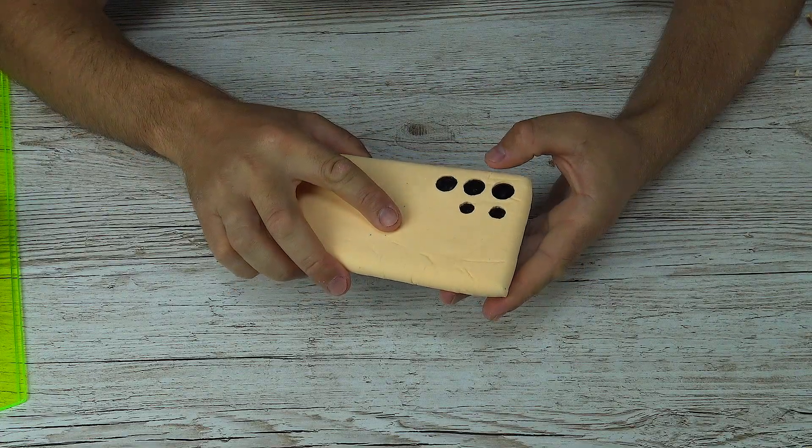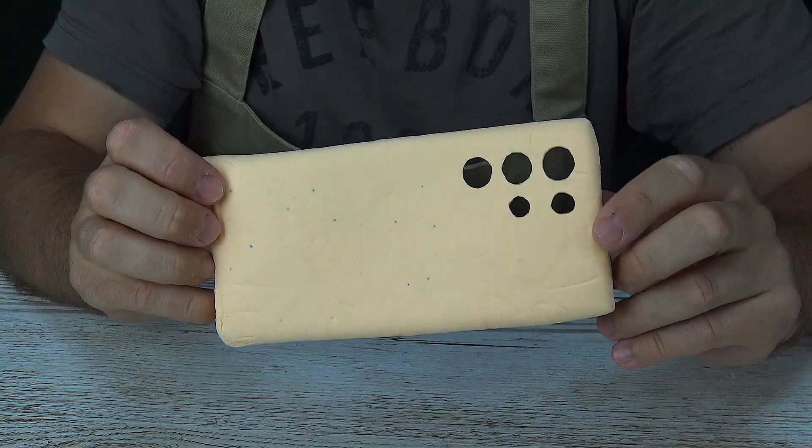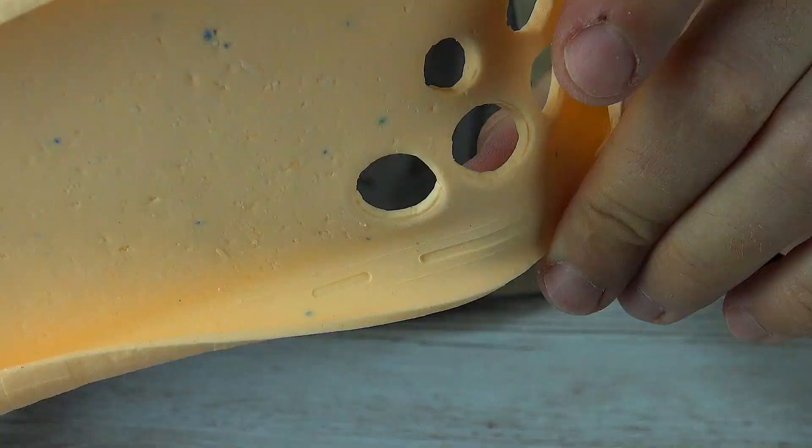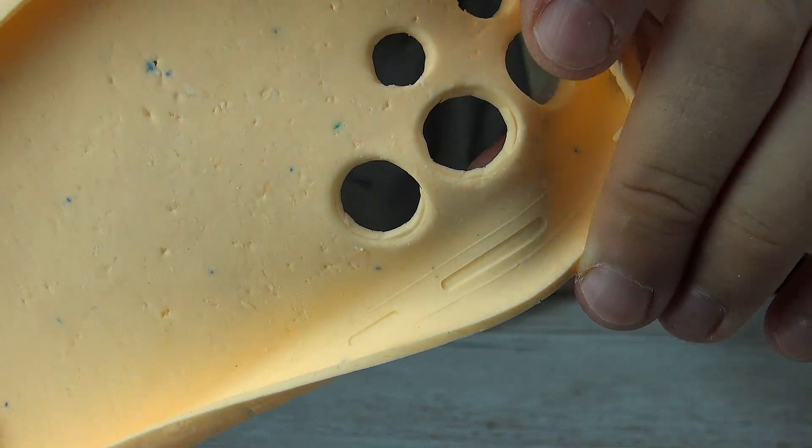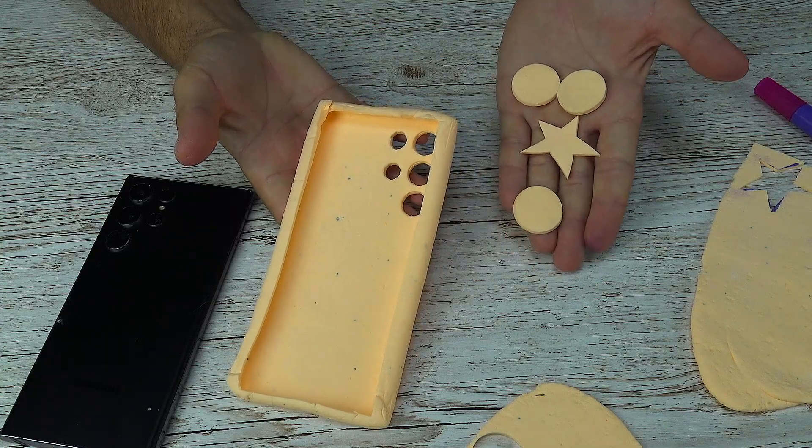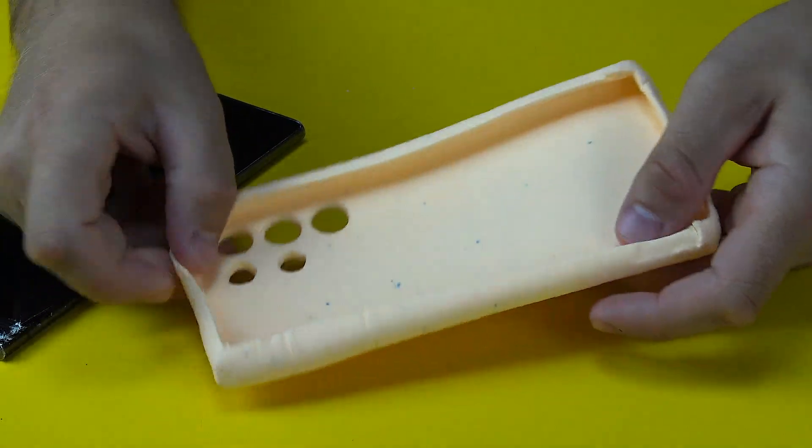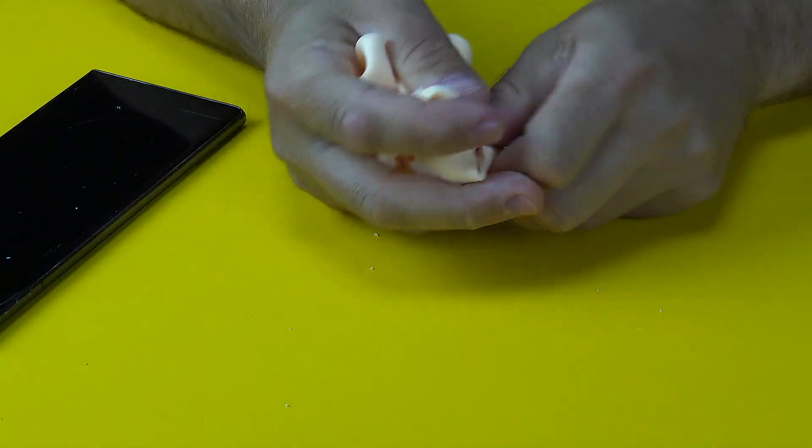These observations help predict how the silicone will behave during pressing. Our experiment showed that the optimal silicone layer thickness for a phone is 3 to 4 millimeters. This layer provides reliable protection while remaining flexible enough to follow the device's contours precisely. This balance of density and elasticity is critical for designing future press molds to ensure every detail comes out perfectly.